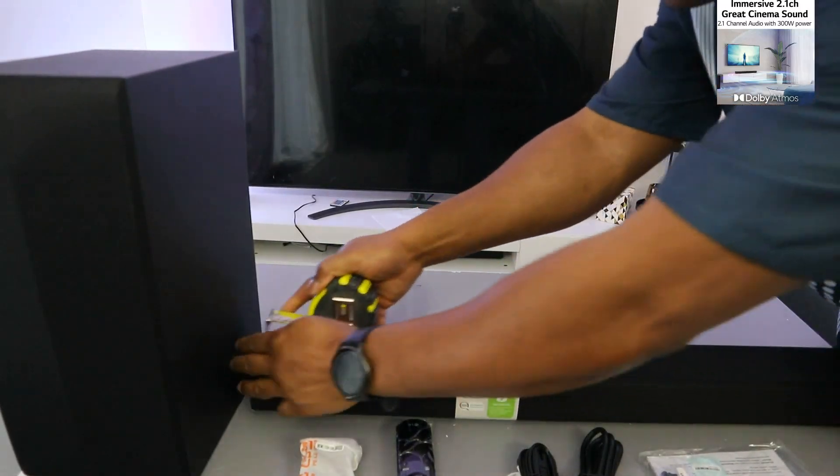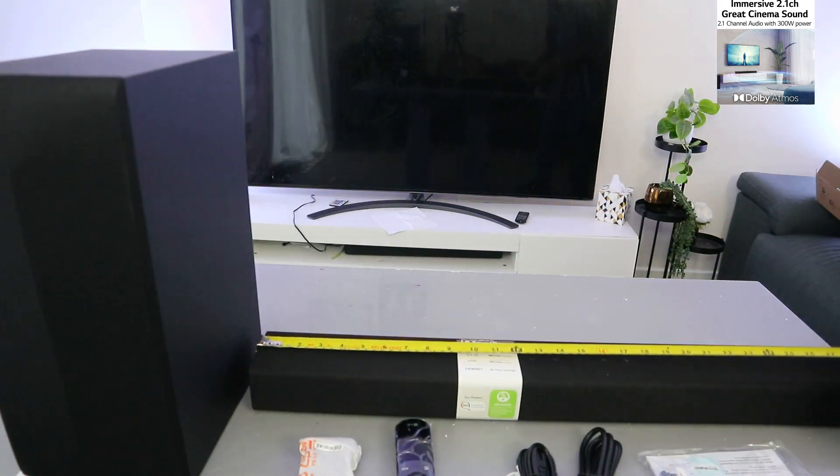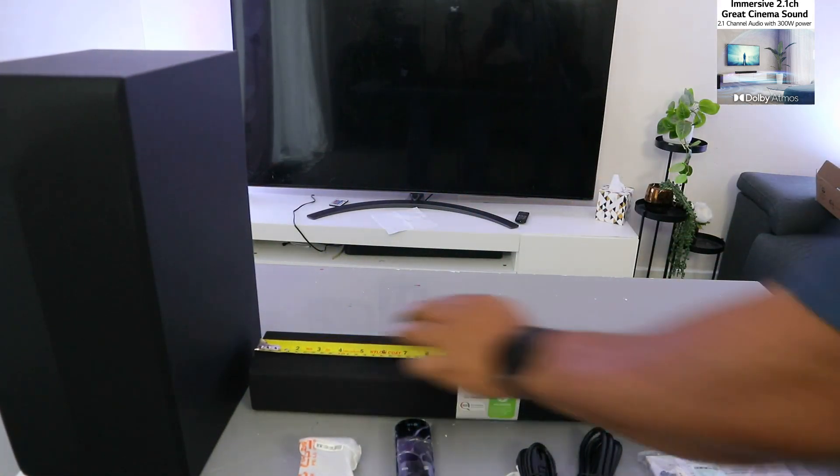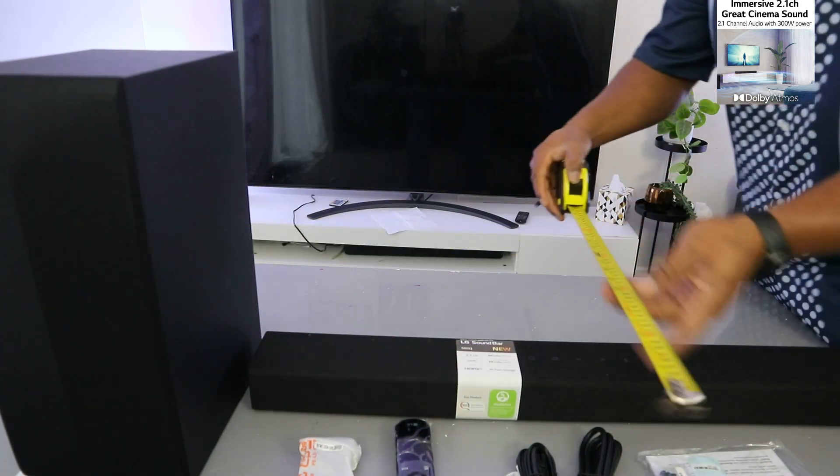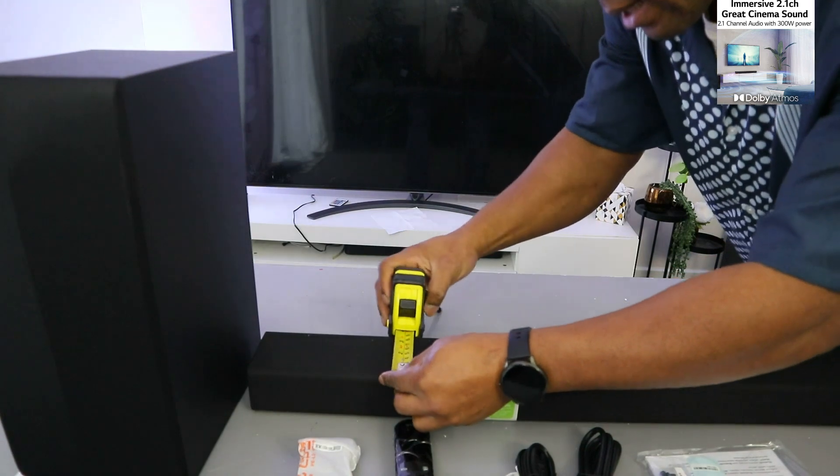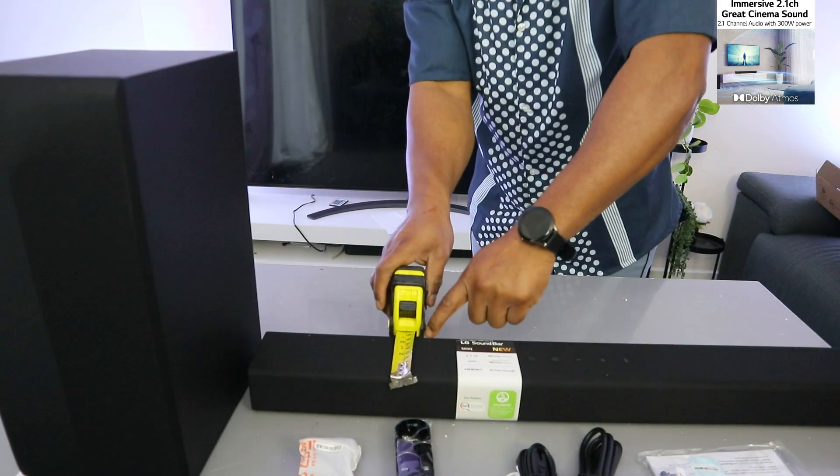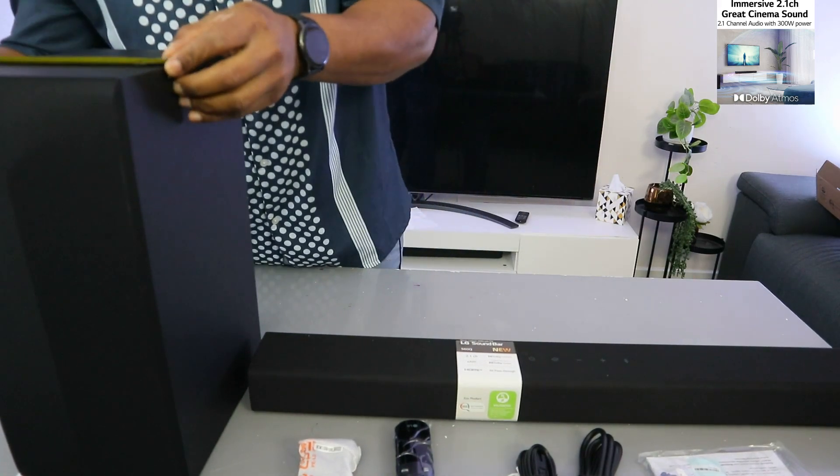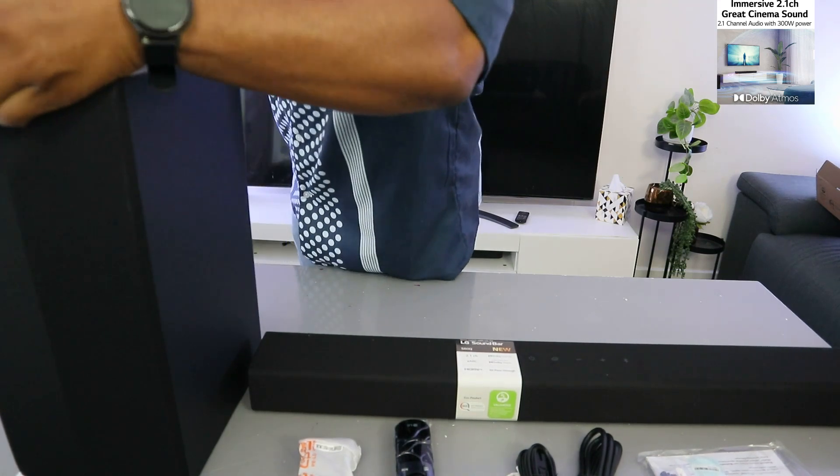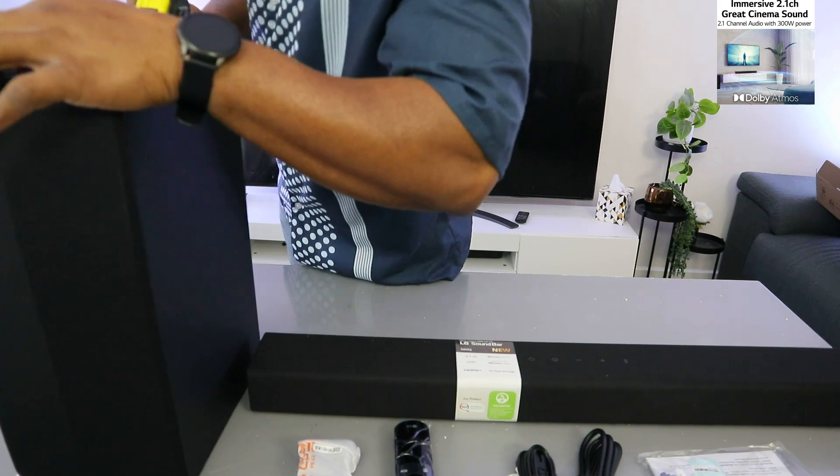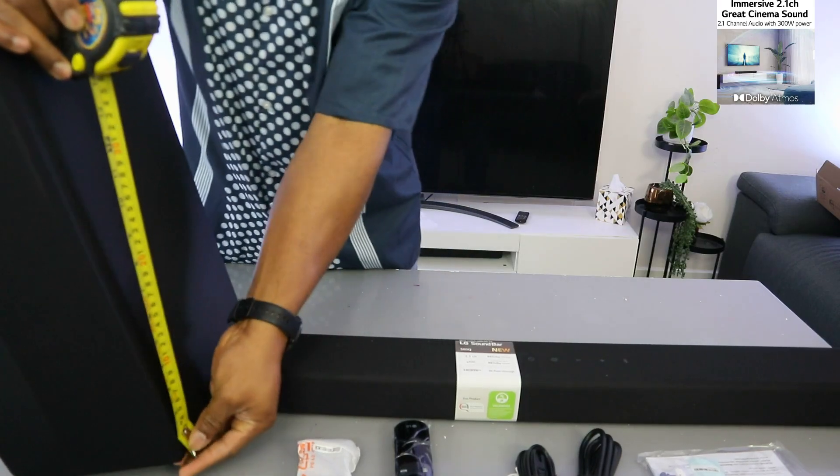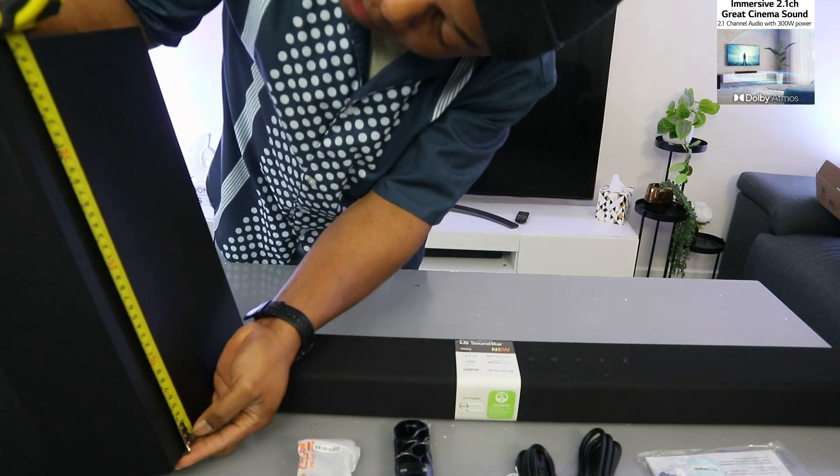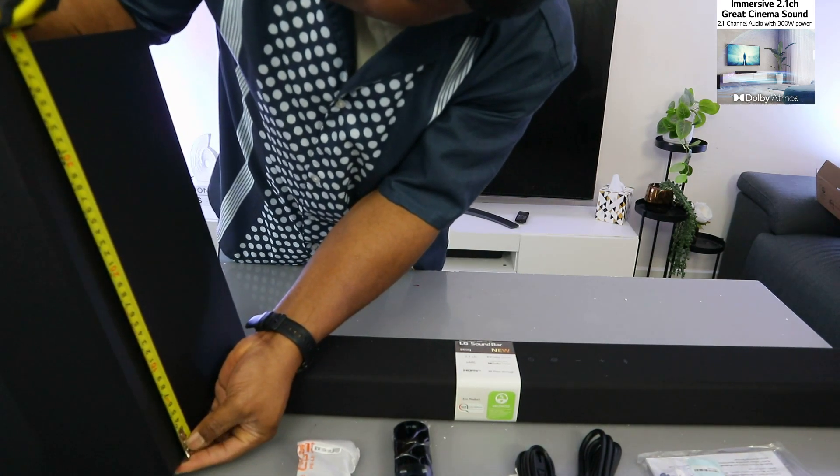I'm just going to measure this. From this end, the width is 9 centimeters, 76 centimeters length. Subwoofer is 17.5 centimeters from the front to the back, 25 centimeters, and from the bottom to the top is 40 centimeters.